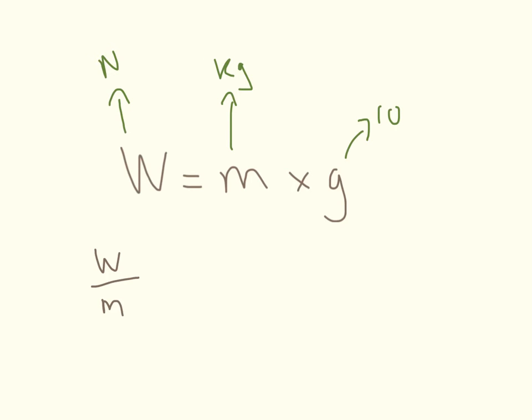So weight divided by mass equals gravity. Replace that with the unit. So newtons divided by kilograms. So our units for gravity is going to be 10 newtons per kilogram.